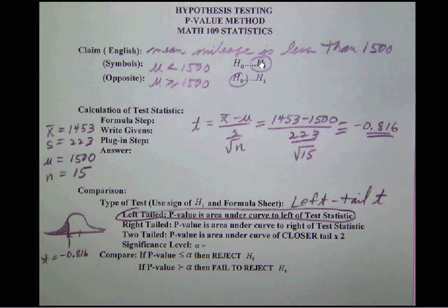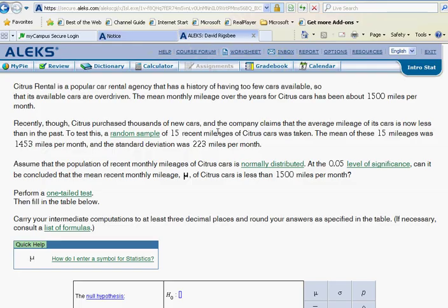Since we're dealing with a situation where we're making a claim about a mean, but notice that sigma is not known. Let's go back and point this out here. Notice that a sample of 15 mileages was taken. The mean of these 15 mileages was 1453 and the standard deviation. Now what standard deviation? The standard deviation of this sample of 15 mileages. So this 223 must be S, the sample standard deviation. So we do not have a situation where sigma is known.